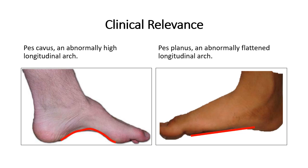Clinically there are two conditions: pes cavus (high arch) and pes planus (flat foot). Pes planus — flat foot — is very common; the longitudinal arch is lost. The arches do not develop until about 2 to 3 years of age, so all children are born with flat feet, and the arches begin to develop around 2 to 3 years. If a child older than 5 or 6 years has no arch, that is flat foot. Flat foot during the first or second year is normal.